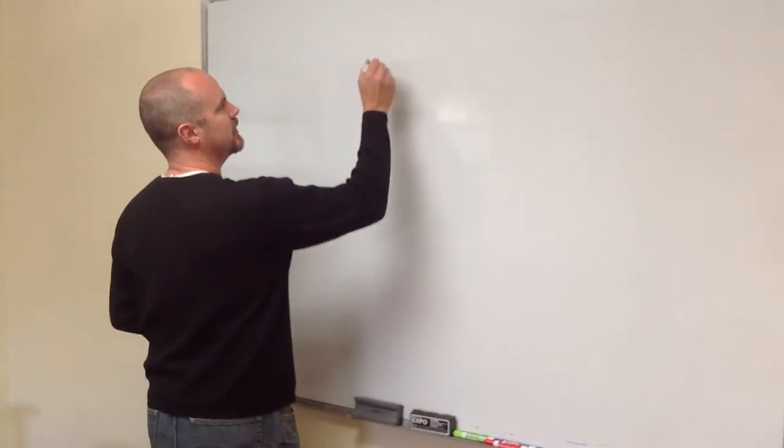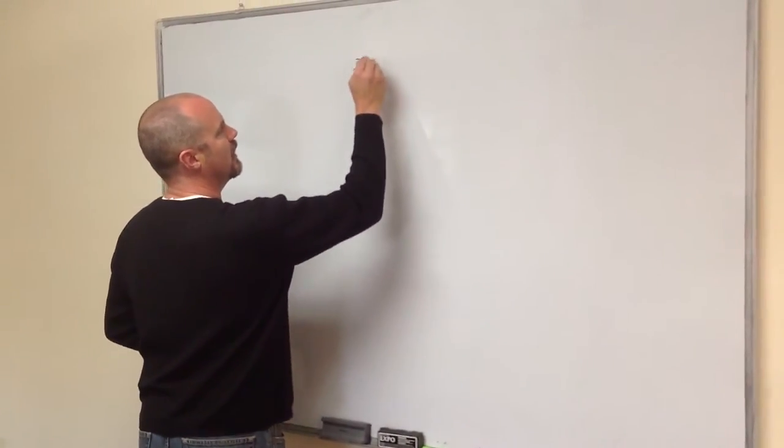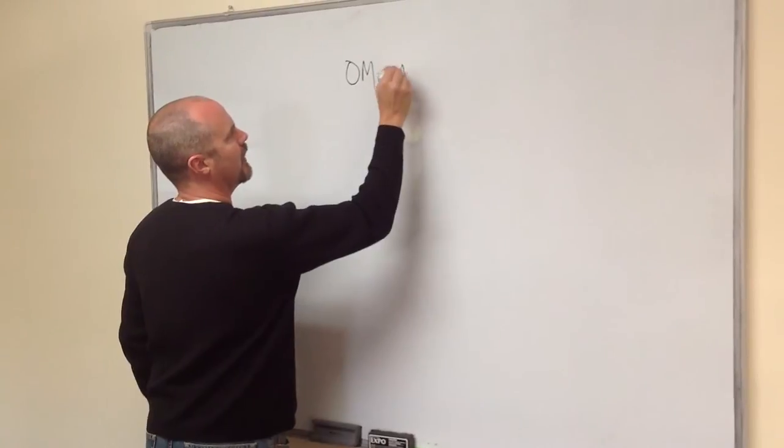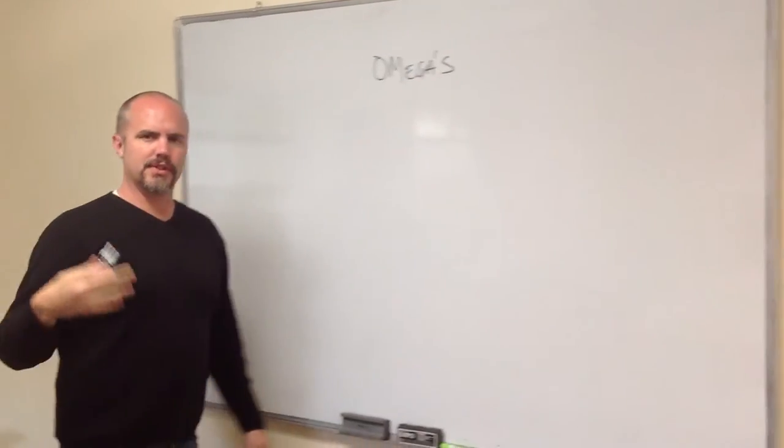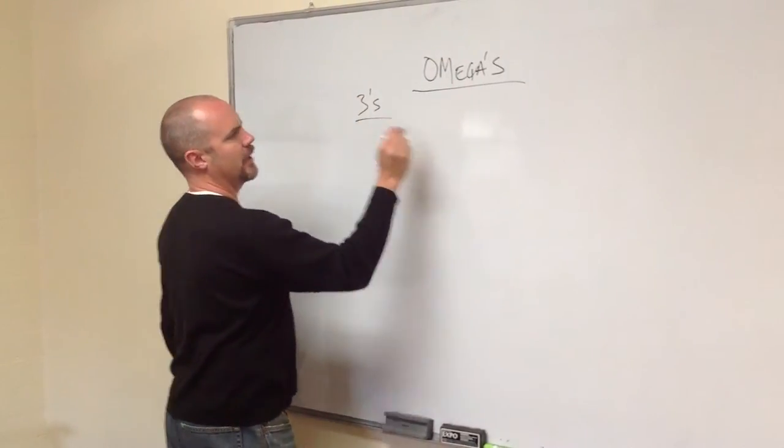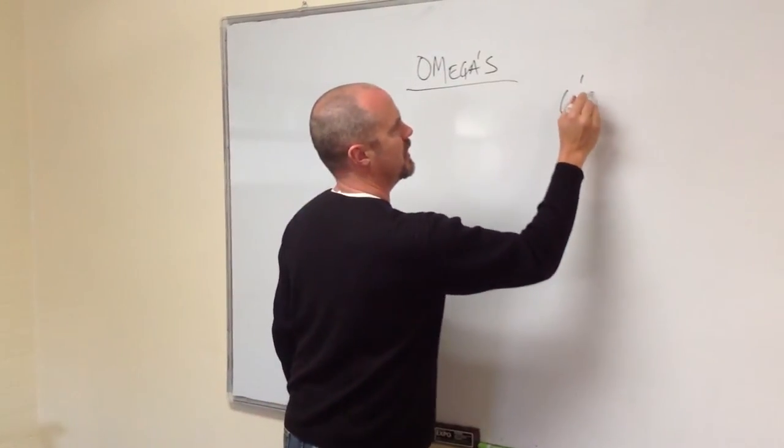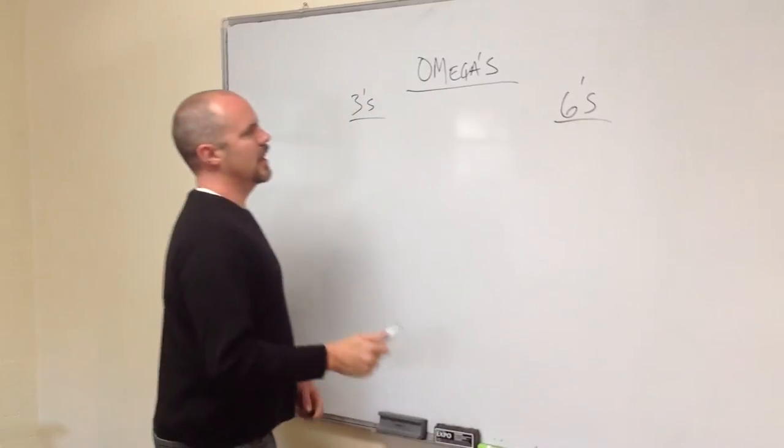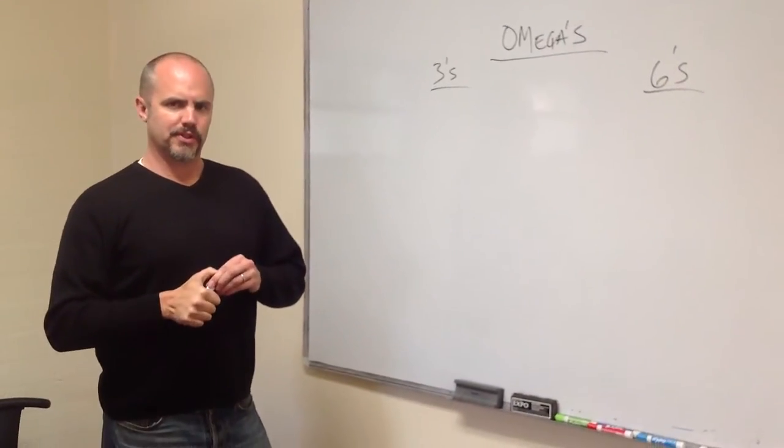So you have Omegas, and there are 3s and 6s and 9s. But for today we're going to talk about 3s and 6s. Now there's a ratio that you're supposed to have between 3s and 6s.